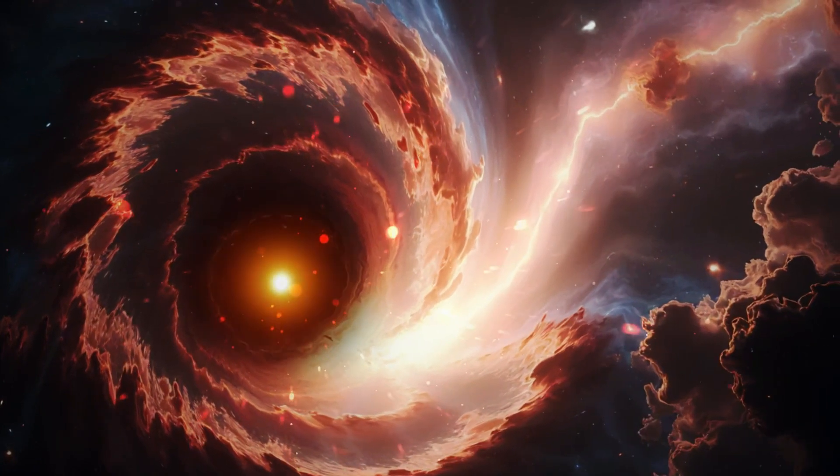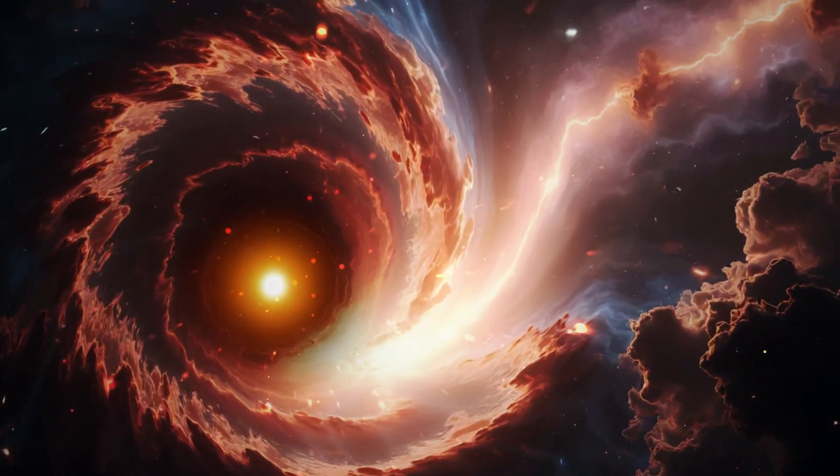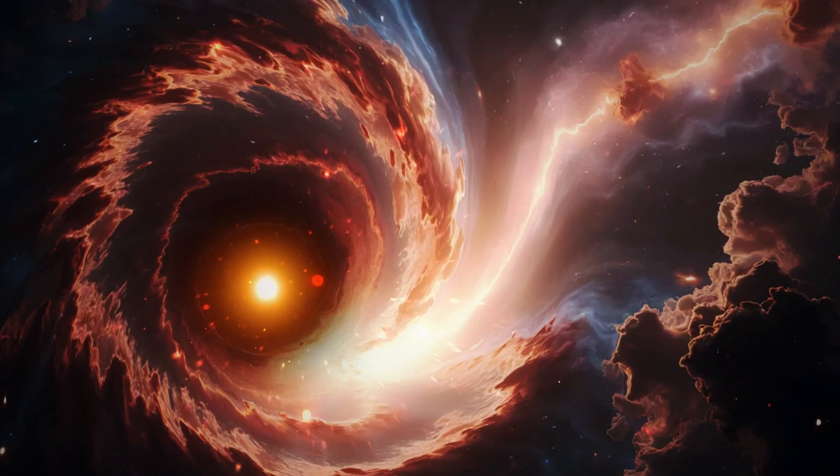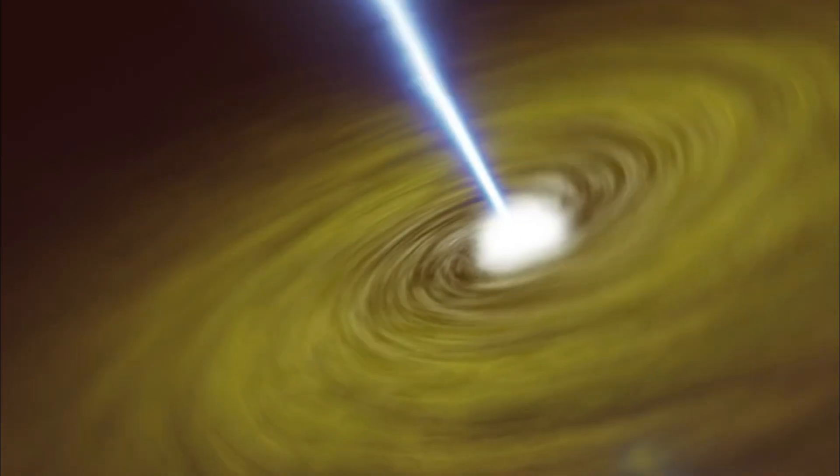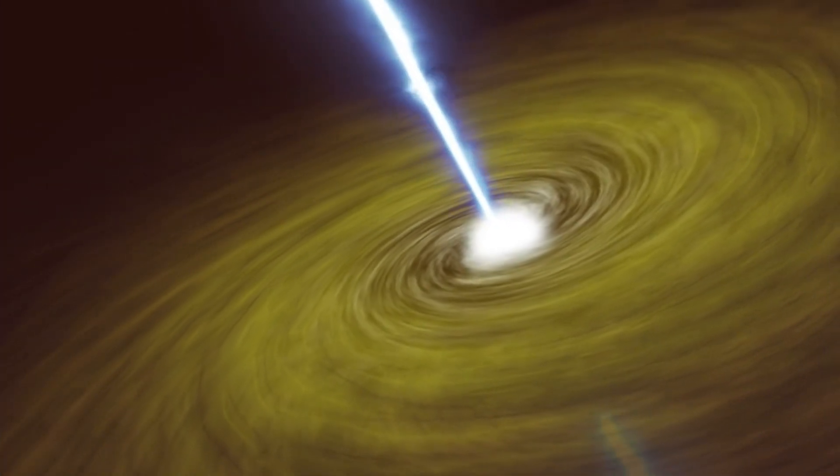This system consists of a black hole roughly seven times the mass of the sun and a companion star locked in a tight orbit. But this wasn't always the case.